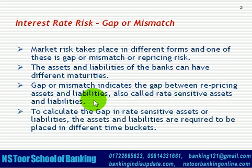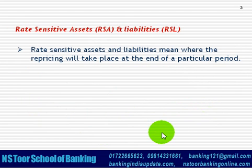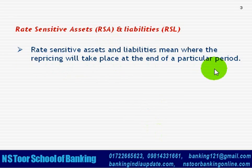To calculate the gap in Rate Sensitive Assets or Rate Sensitive Liabilities, the assets and liabilities will be placed in different time buckets. Broadly there are 10 time buckets for Indian banks. Rate Sensitive Assets and Liabilities means those where repricing takes place at the end of a particular period — in case of assets as well as liabilities.